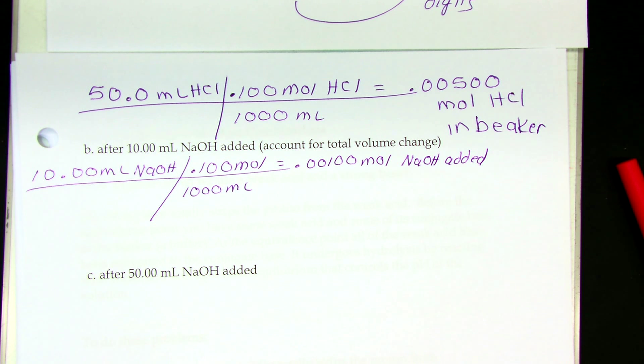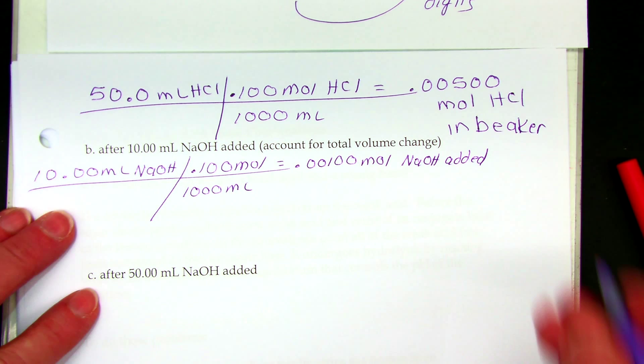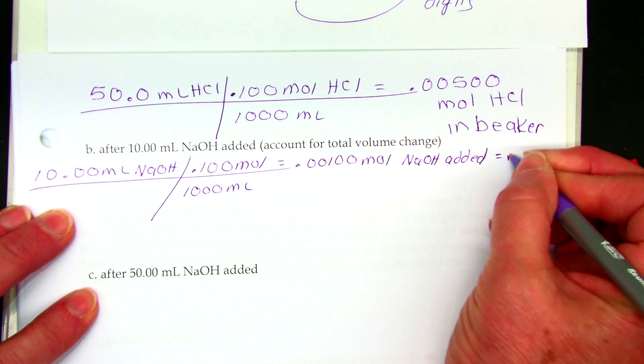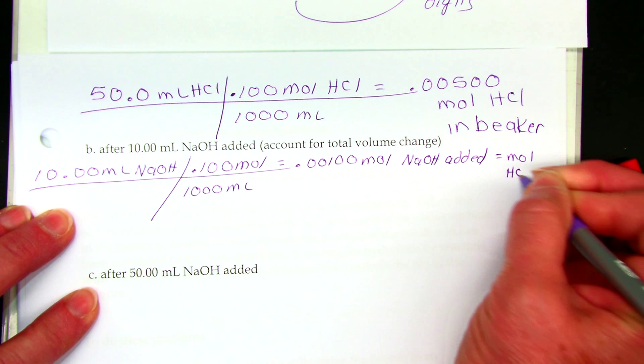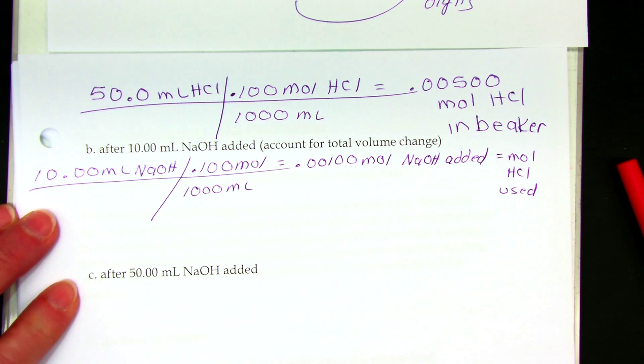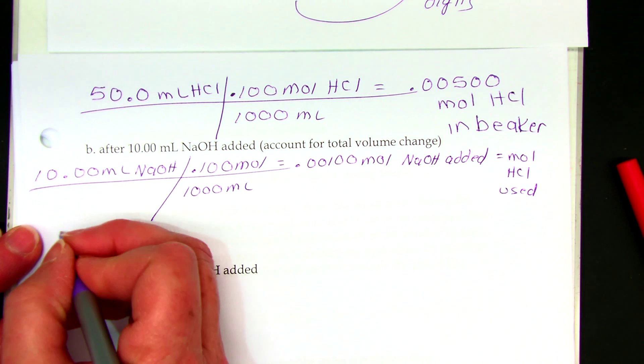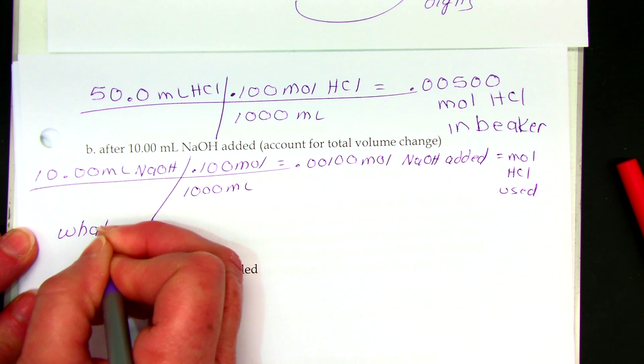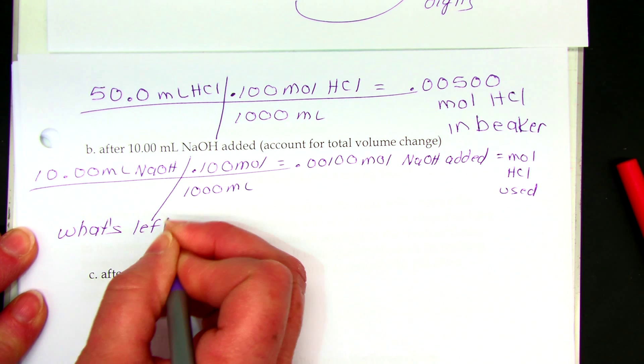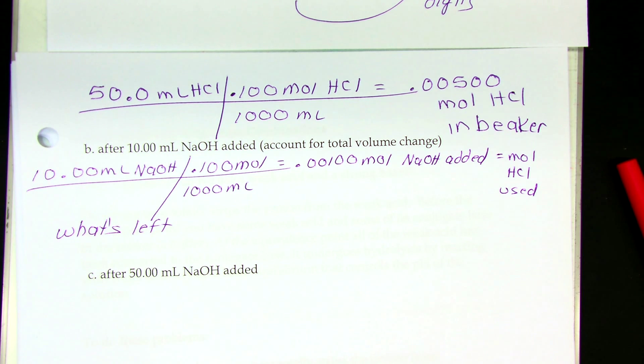Now, when I added that sodium hydroxide, what was it doing? Reacting or using up, getting rid of the HCl. So that's also equal to the moles of HCl used up. So if we think about this, we say, what's left? All the sodium hydroxide that I added is reacted. It's gone. There's no sodium hydroxide in my beaker now. There's sodium chloride and some water.